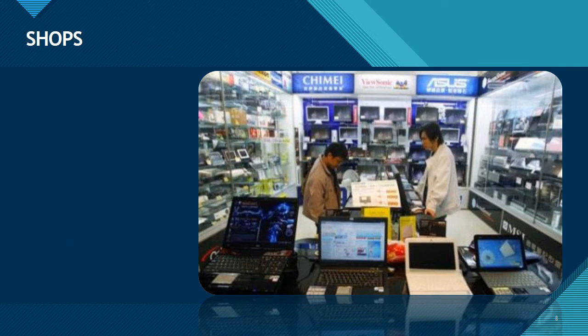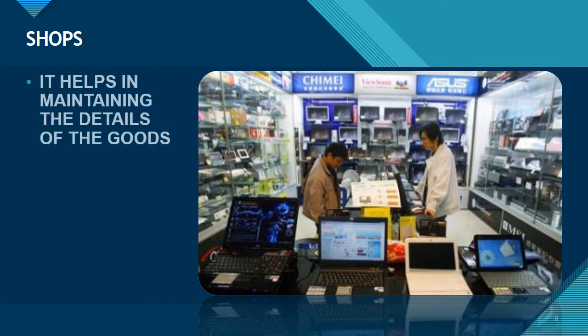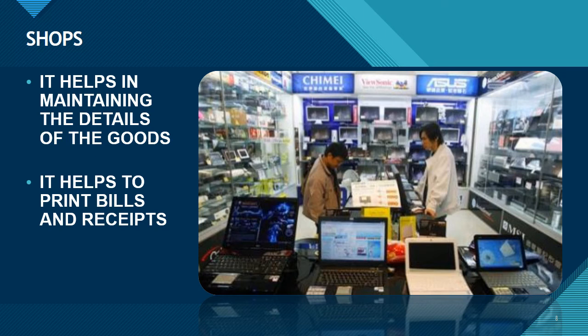Now we are going to learn about uses of computer in our shops. In shops, it helps to maintain the details of goods. Goods means the items or things that customers are going to buy — it can be a mobile phone, laptop, groceries or even stationery items. It also helps to print bills and receipts. In the supermarket, when you buy something, they give you a bill and receipt for the items, and computers are used to print those bills and receipts.